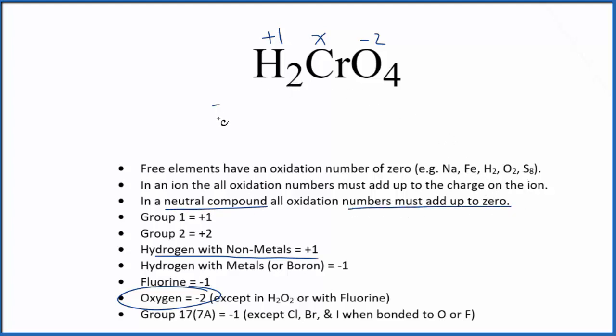So we could just say two times the one plus, plus X, since we don't know the chromium, and then we have the negative two times four oxygen atoms, all that's going to equal zero. So two plus X minus eight equals zero.